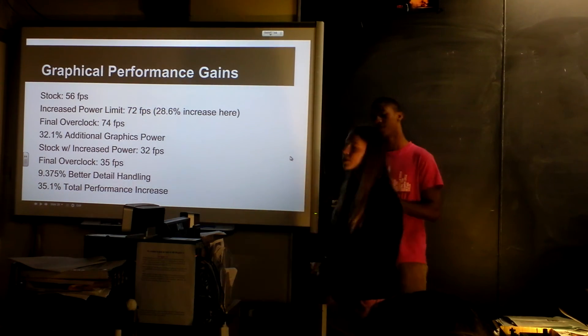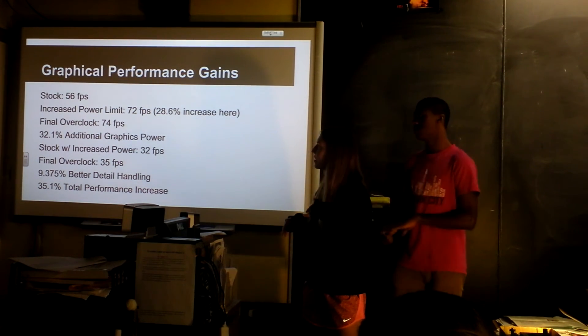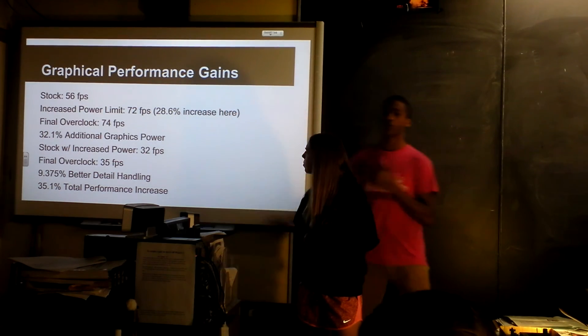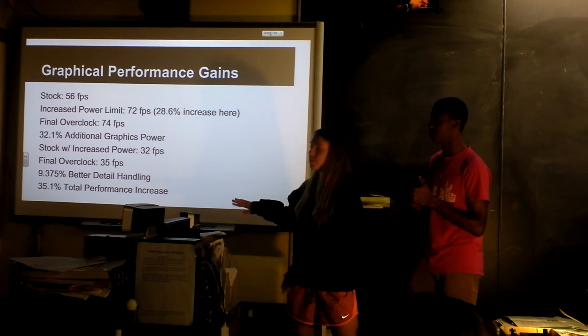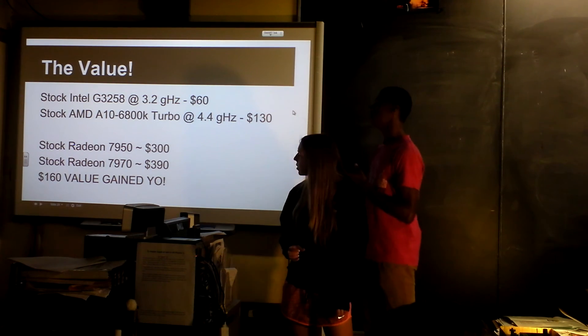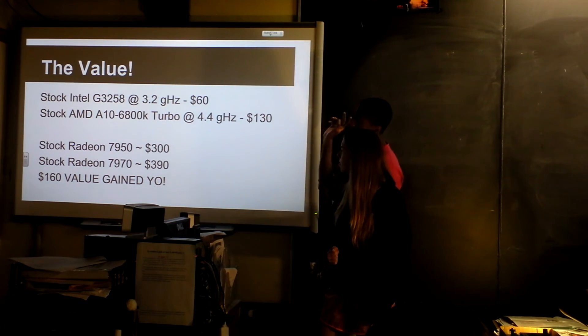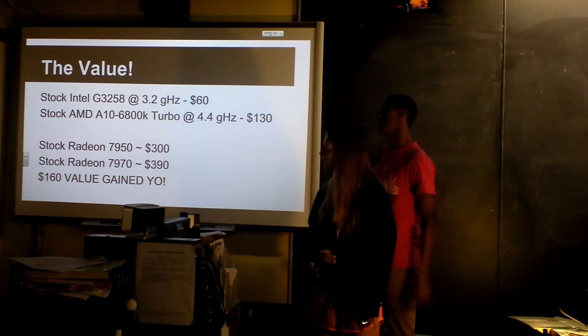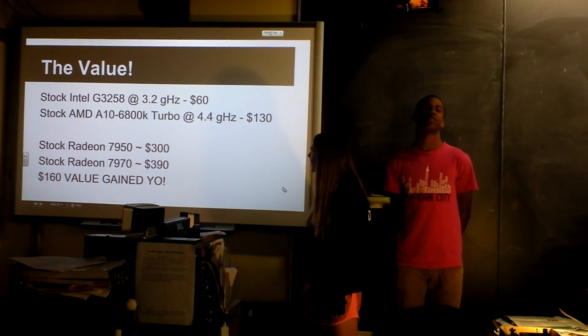Okay, and so we started with 56 frames per second, and then we got a 28.6% increase with 72 frames per second. And then the final overclock was 74 frames per second. And this 28.6% came just from increasing the power from 250 watts to 300 watts. And then we got a total performance increase of 35.1%, which is again, higher than we predicted with the 20. And this is just showing how much value we got from overclocking as opposed to using it. I paid $60 for the processor, and it's working at the frequency of a $130 processor, and then the graphics card's working to the performance of one that cost $90 more, so we got $160 in value just from overclocking, and nothing exploded. Nothing exploded. That's it. Thank you.